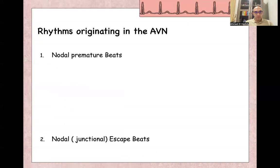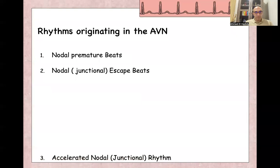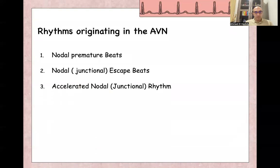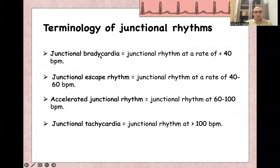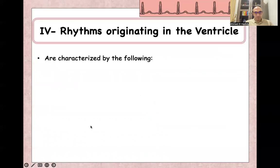Examples include nodal premature beats, junctional or nodal escape beats, accelerated nodal or junctional rhythm, and nodal or junctional tachycardia. The classification of junctional rhythm depends on heart rate: below 40 bpm is junctional bradycardia; 40–60 bpm is junctional escape rhythm; 60–100 bpm is accelerated junctional rhythm; and above 100 bpm is junctional tachycardia.